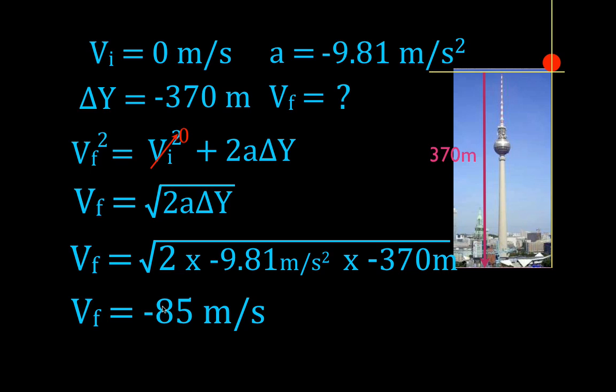The magnitude, the speed, the magnitude of the velocity is 85 meters per second, and because it's falling down, we put a negative sign. It's moving in the negative direction. Velocity is a vector, and it's pointing in the negative direction. So the final velocity of the apple after it falls from the very top of the Fernsehturm, freefall motion from 370 meters, is minus 85 meters per second.